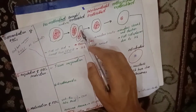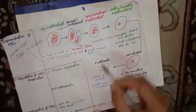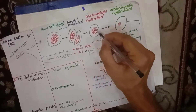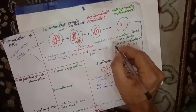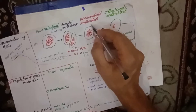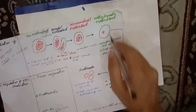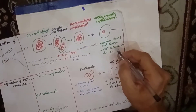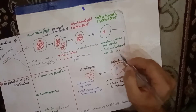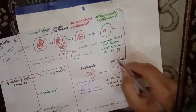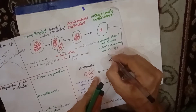The basophil erythroblast differentiates into the polychromatophil erythroblast. During this stage, the size of the nucleus becomes smaller. This polychromatophil erythroblast then differentiates into the orthochromatic erythroblast, in which the nucleus shrinks and darkens, and the cytoplasm becomes pink due to the presence of hemoglobin, with a hemoglobin concentration of approximately 34%.